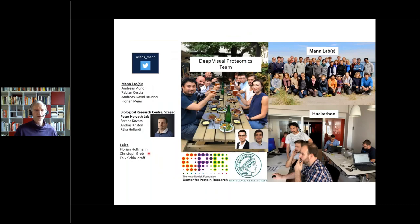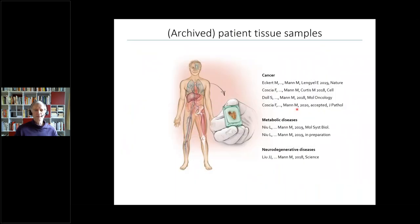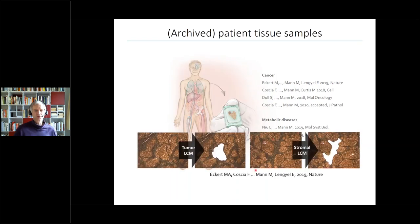This involves several teams: Peter Horwath's lab in Hungary, who are leaders in AI and segmentation, and Leica, who made hardware modifications to both their lab and ours. This work involves our two groups in Copenhagen and Munich — a hackathon was held in Copenhagen. We have a history in tissue proteomics, for instance in ovarian cancer, where until recently we always cut out areas of the tissue like tumor area and stromal region. This led to finding a target in the stroma — good because it cannot mutate — but the real prize would be to do single cells or single cell types.